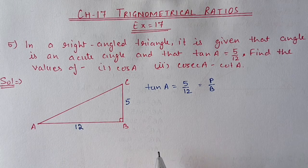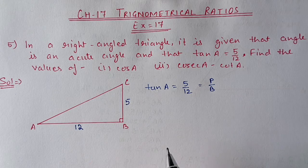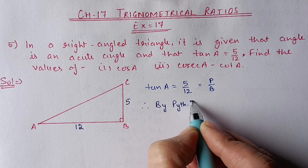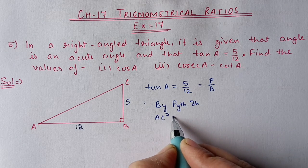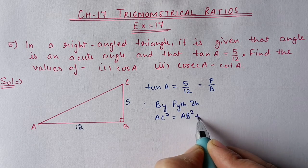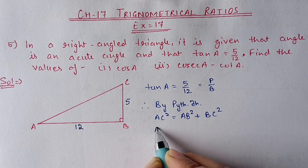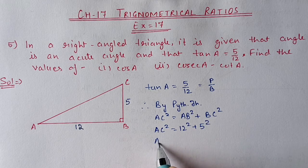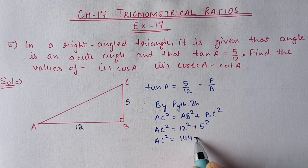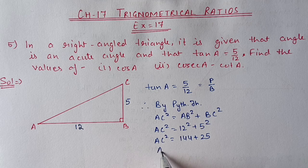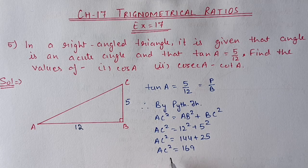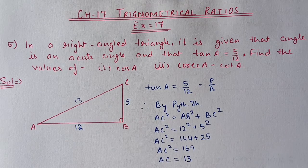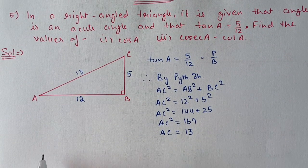With the help of Pythagoras theorem we can find out the third side. Therefore, by Pythagoras theorem, AC square is equal to AB square plus BC square. AB is 12 and BC is 5, so 144 plus 25 gives us 169, and 169 is the square of 13. So AC value we are getting is 13.